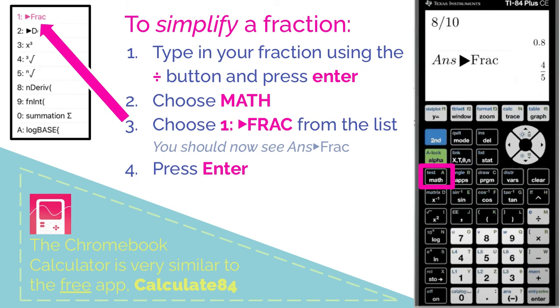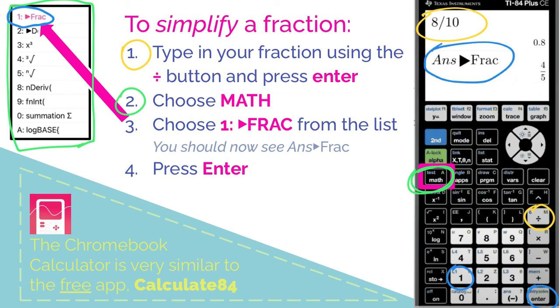Finally, when simplifying a fraction, first type in the fraction using the division sign. That's step one. Step two: choose the button that says math, which will open this table. From that table, choose the fraction button by either pushing enter or pressing the number one. This should show on your screen: answer with a black arrow, then frac or fraction. When you push enter as the very last step, you should get the simplified fraction. Go ahead and try that and make sure it works for you.